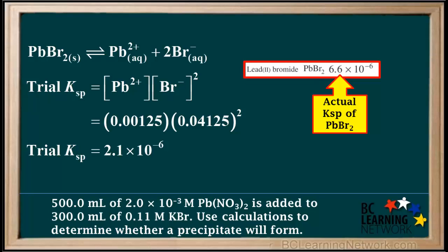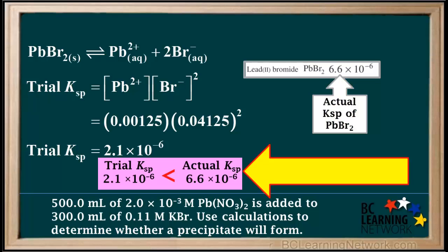Looking at the KSP table, we see that the actual KSP of lead(II) bromide, PbBr₂, is 6.6×10⁻⁶. Comparing the trial KSP of 2.1×10⁻⁶ with the actual KSP of 6.6×10⁻⁶, we see that the trial KSP is less than the actual KSP. So when the two original solutions are mixed, a precipitate will not form in this case.